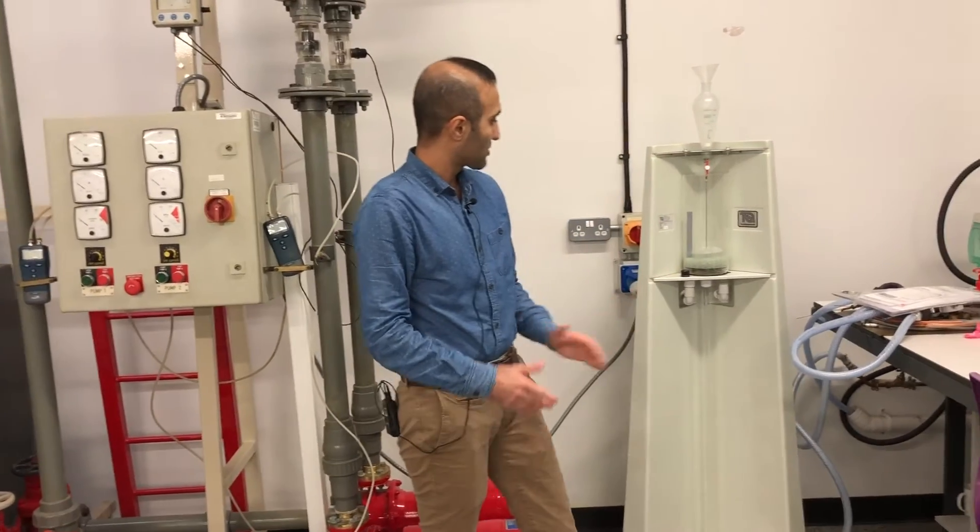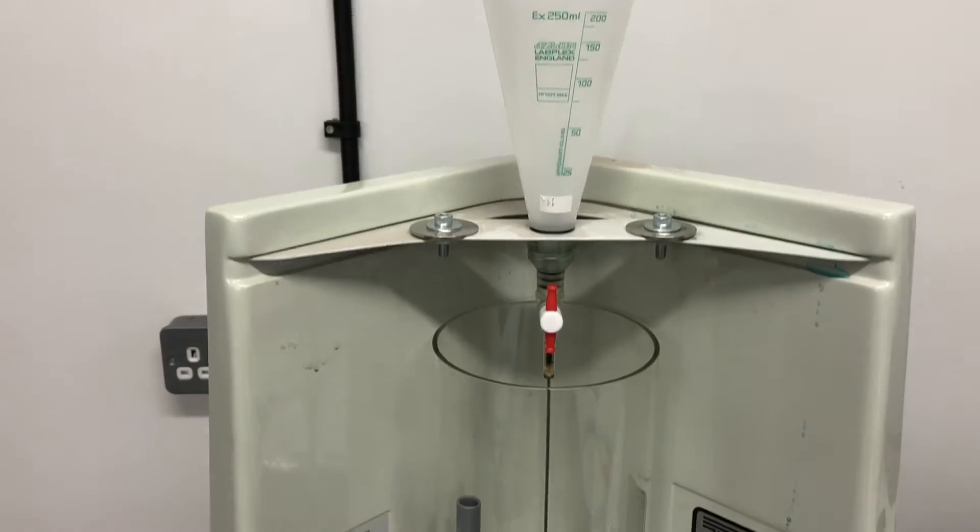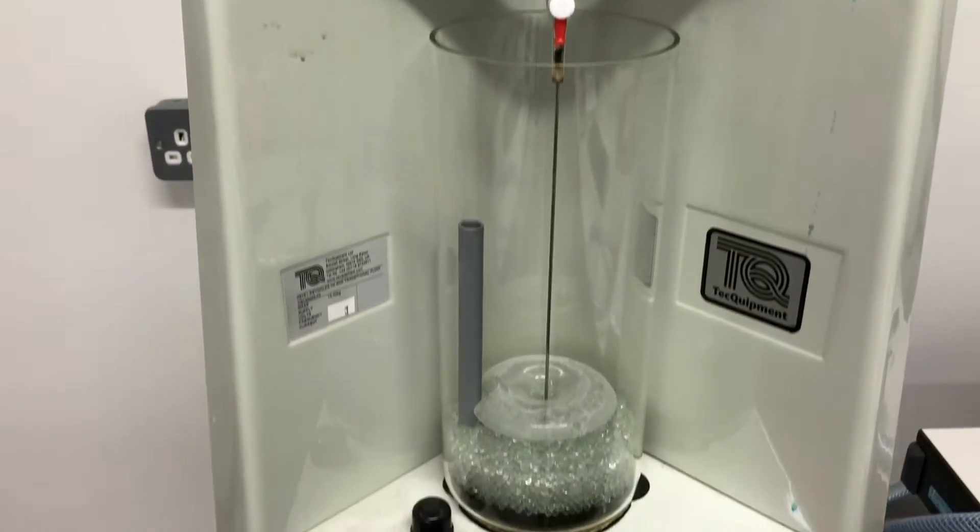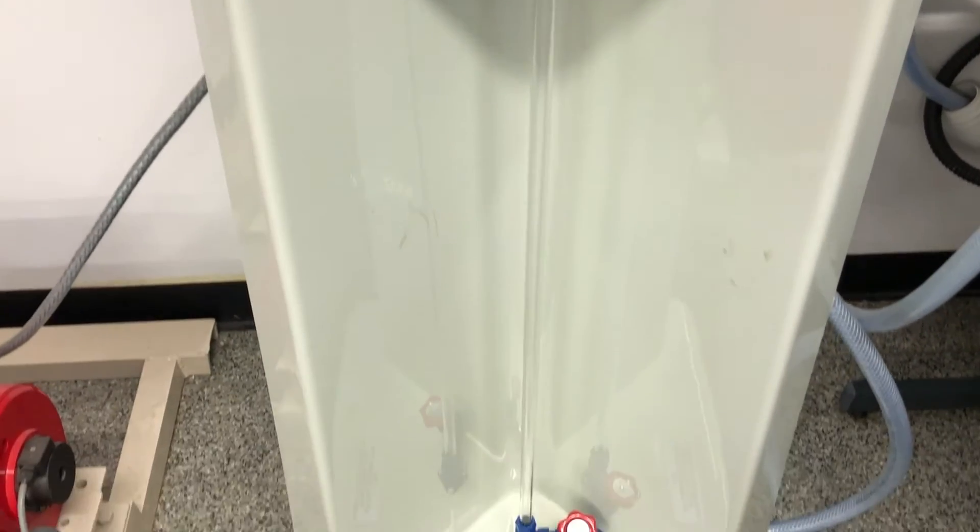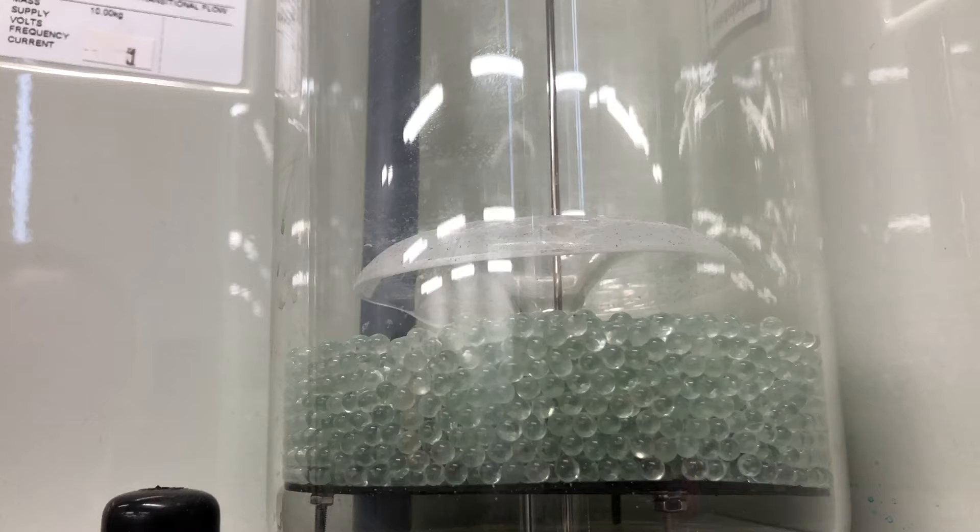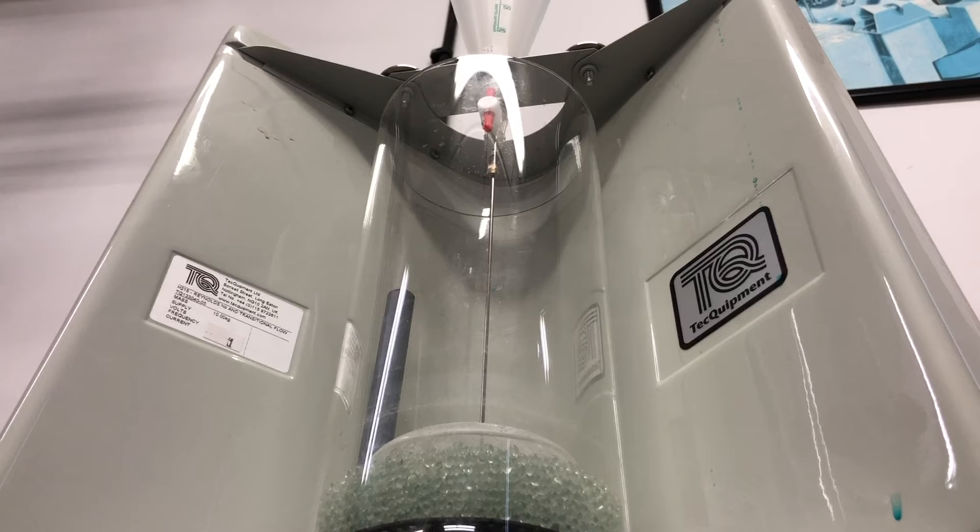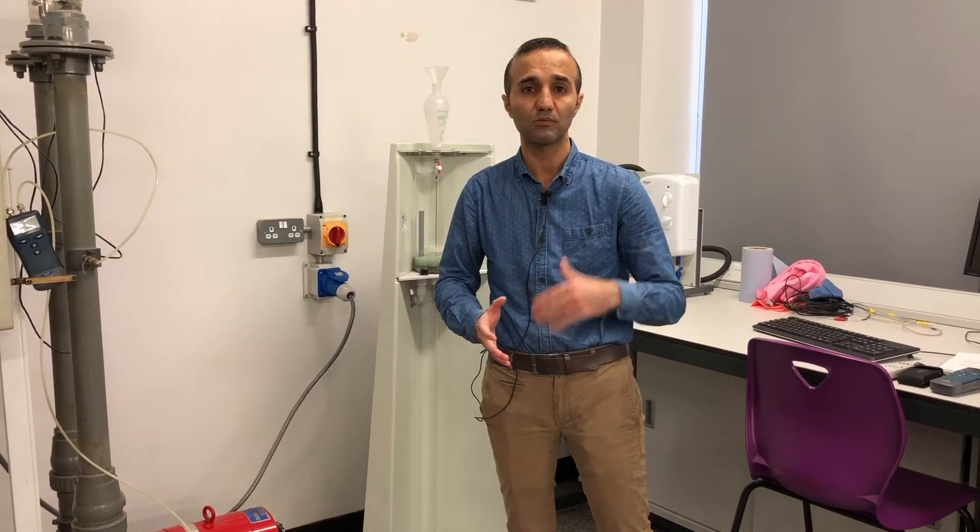Next to me there is a Reynolds Osborne apparatus. It is quite a useful apparatus for showing different fluid regimes from laminar to transitional and turbulent. This apparatus is just for the sake of demonstration to get used to the concepts of fluid regime from laminar to turbulent.